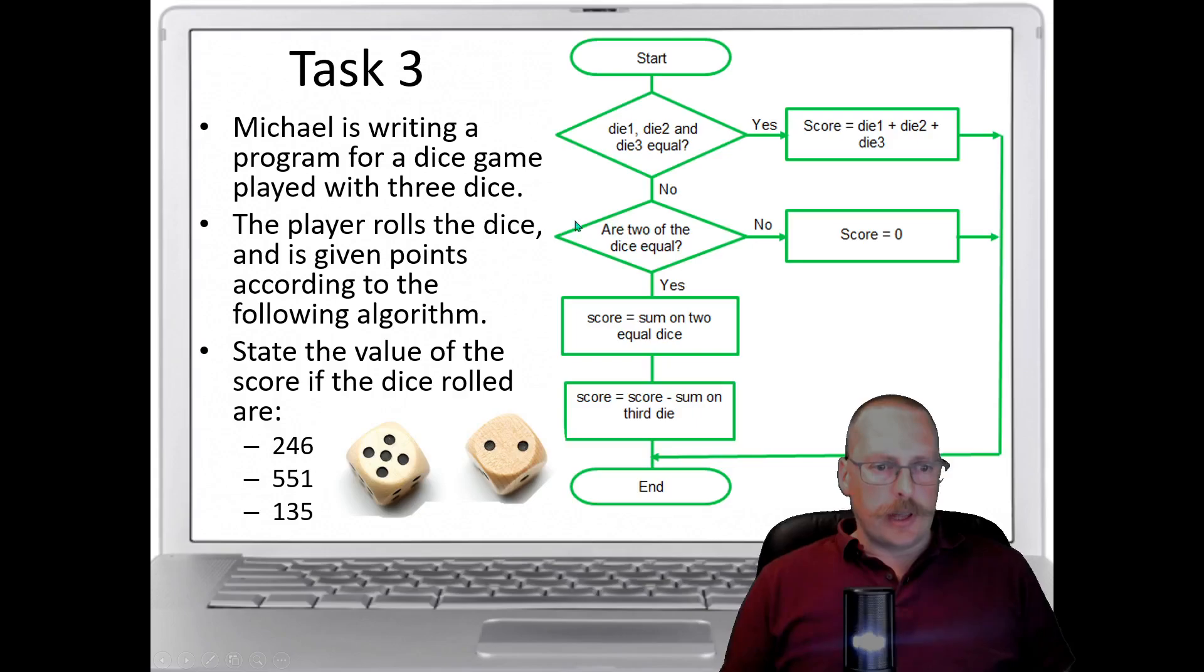Are 2 of the dice equal? So is 2 the same as 4 and 6? Well they're not. So we need to go to this no and we score 0. And then the direction of flow shows we go around this way to the end. So I've given the answer of 0 for 2, 4, 6 because none of them are equal. Two of them are not equal. Therefore we have to go this way around. So I've given the first answer. You now need to solve the next two. So again pause the video and complete this task.